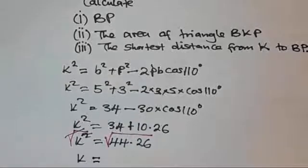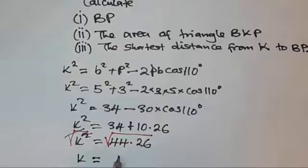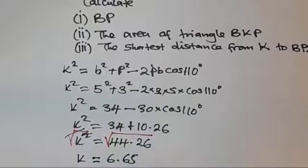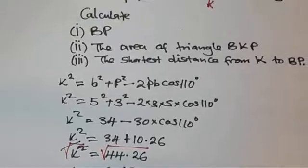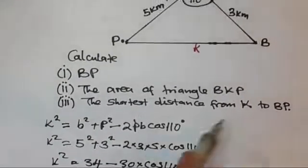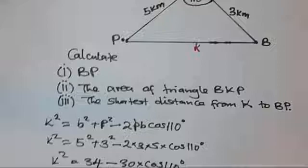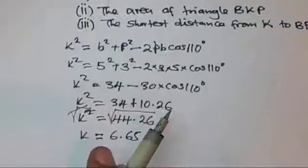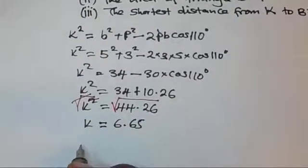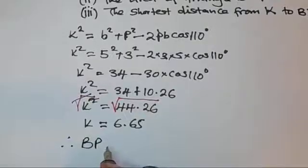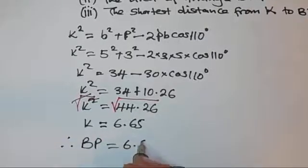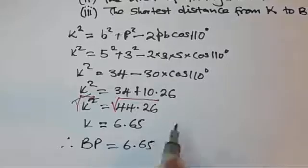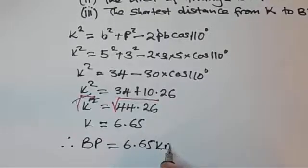The square root of 44.26 is 6.65. Since they are asking for BP, we conclude: therefore BP = 6.65 kilometres.